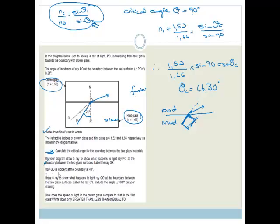Now it says ray QO is incident at the boundary at 40 degrees. Draw a ray to show what happens to the light ray QO at the boundary between the two glass surfaces. Label the ray OY. Include the angle NOY in your drawing. So ray QO is also going to be bent away from the normal.